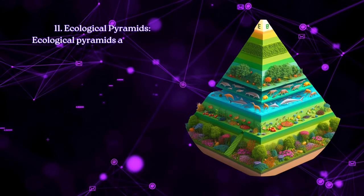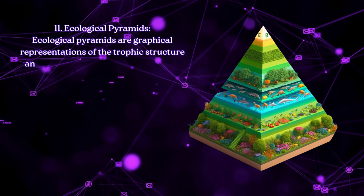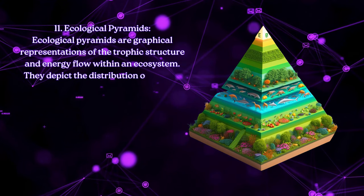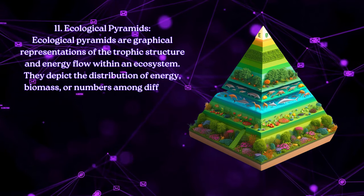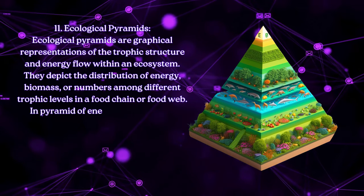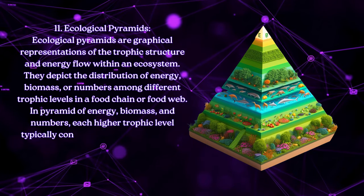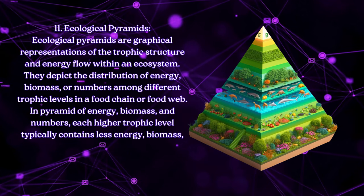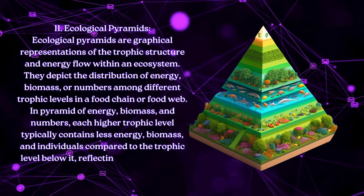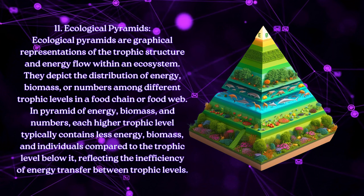Ecological pyramids are graphical representations of the trophic structure and energy flow within an ecosystem. They depict the distribution of energy, biomass, or numbers among different trophic levels in a food chain or food web. In pyramids of energy, biomass, and numbers, each higher trophic level typically contains less energy, biomass, and individuals compared to the trophic level below it, reflecting the inefficiency of energy transfer between trophic levels.